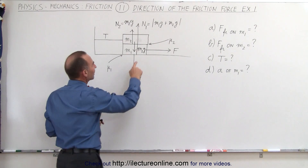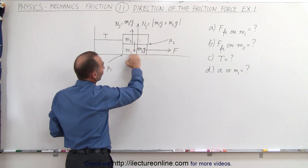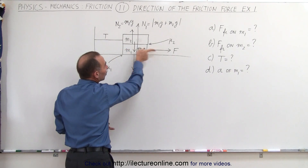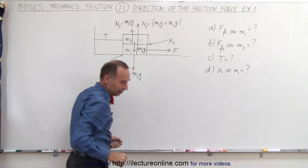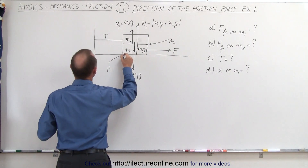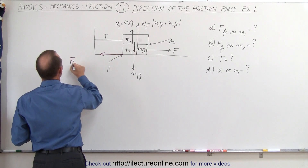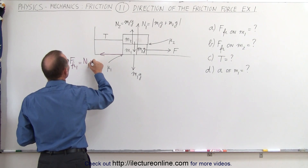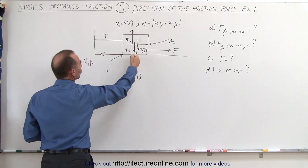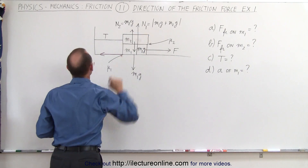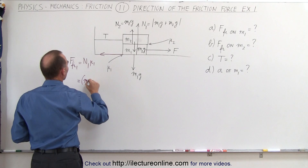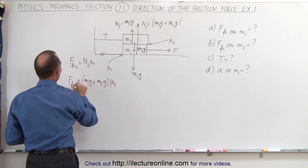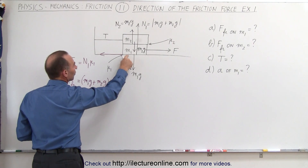Let's find all the friction forces acting on M1. First, there's a friction force between M1 and the ground surface. Since M1 would be moving to the right if there were no friction, the friction force acts to the left. We call this friction force 1, equal to N1 times mu sub 1, which gives us (M1G + M2G) times mu sub 1. That's the magnitude of friction force 1 between the surface and block M1.